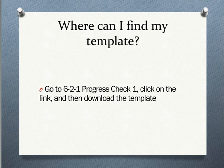Where can you find your template? Go to 621 — what would normally be Module 6, Theme 3, Week 6 — 621 Progress Check 1. Click on the link and then you can download the template. You can literally just write it right in there like we did with the Topic Exploration Worksheet and the Secondary Source Analysis. Use the document we give you, because that will help you make sure you've completed each section, and that will help us know that you've completed each section.